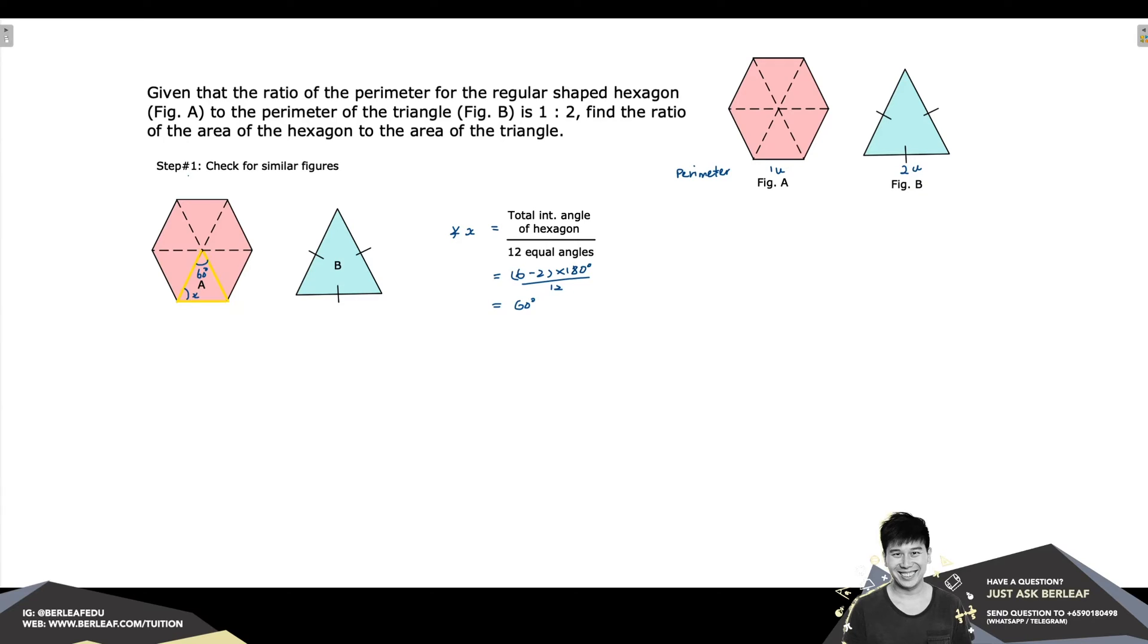With all angles in A being 60 degrees, this tells us that triangle A is an equilateral triangle, which makes it similar to triangle B, which is also an equilateral triangle.